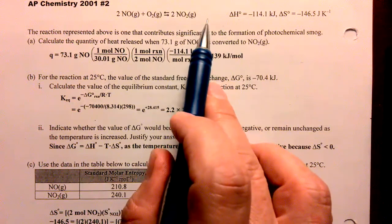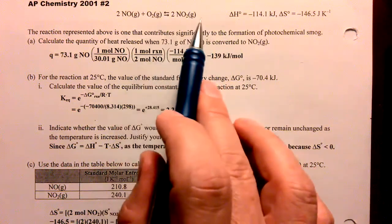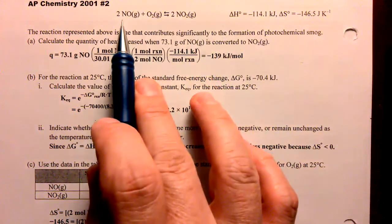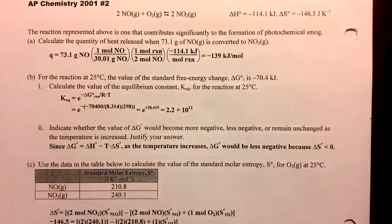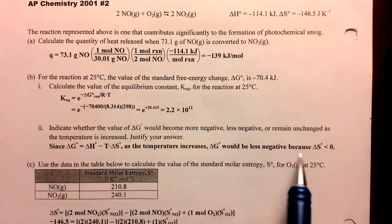If we increase the temperature that's providing heat to the reaction, that will force it back left. Left is a less negative delta G standard number, less negative.